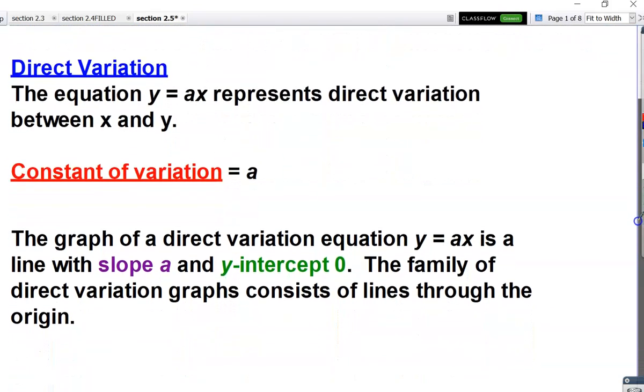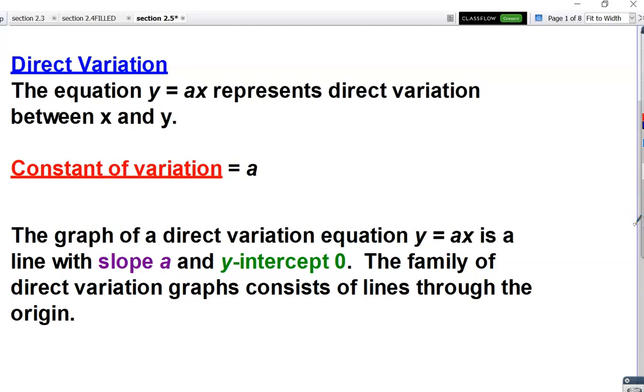So to start off, let's define what that means. Direct variation is basically a linear equation that has zero as a y-intercept. So the only thing we're going to change up a little bit is that you'll notice it's not y equals mx, it says y equals ax. And there is no b because direct variation equations will always pass through the origin. So you don't need to write plus zero because adding zero doesn't change anything.